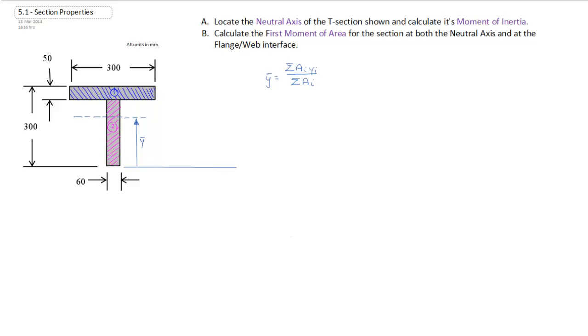And now what I want to do is I want to label on the diagram, y_1 and y_2. So from the centroid of area one, this would be y_1. And from the centroid of area two, that would give us y_2.